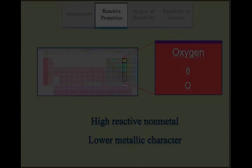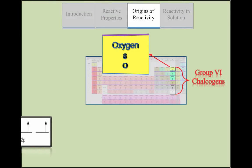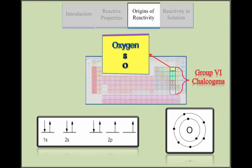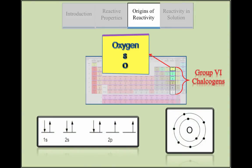Oxygen is part of the group 6 chalcogens, which appear in both independent and combined states in nature. This is due to their electron configuration, because they only need two valence electrons to complete a full octet.